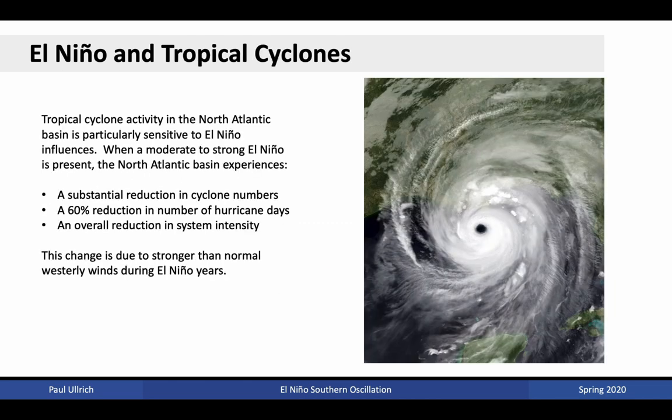El Niño is also strongly connected with extreme weather events. Tropical cyclone activity in the North Atlantic basin is particularly sensitive to El Niño influences. When a moderate to strong El Niño event is present, the North Atlantic basin tends to experience a substantial reduction in cyclone numbers, a 60% reduction in the number of hurricane days, and an overall reduction in system intensity. This change is due to stronger than normal westerly winds that typically occur during these El Niño years, and hence the tendency towards greater shearing in the atmosphere.